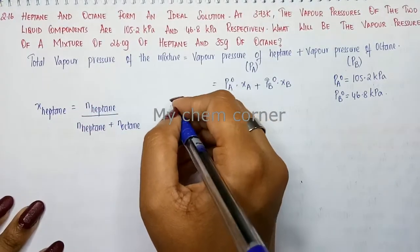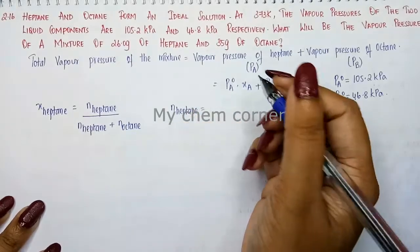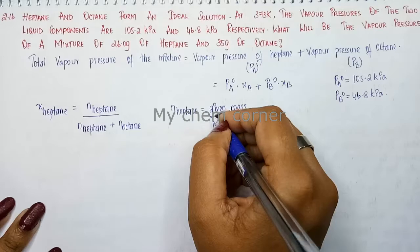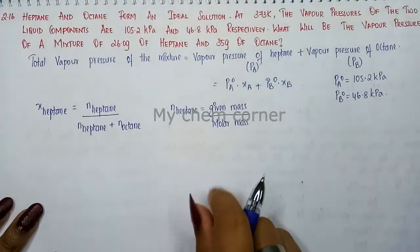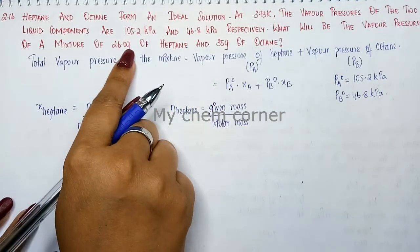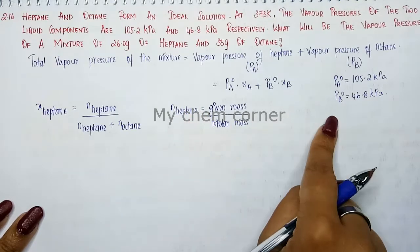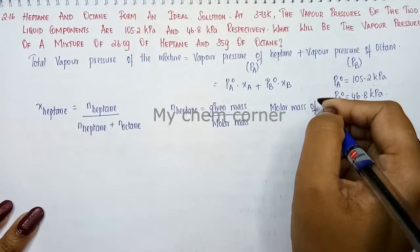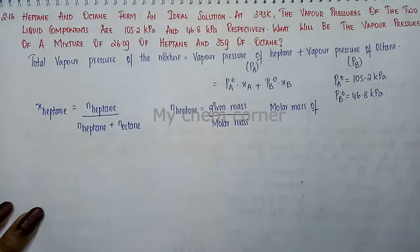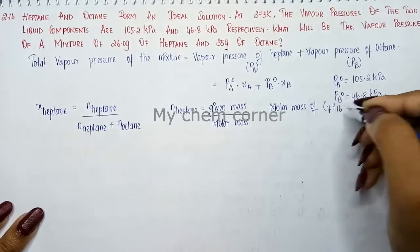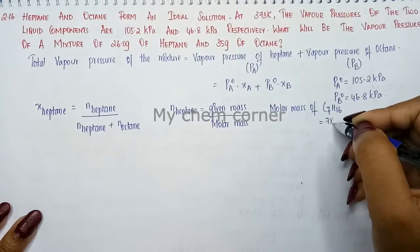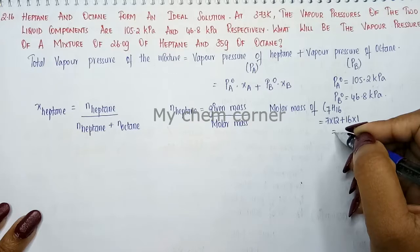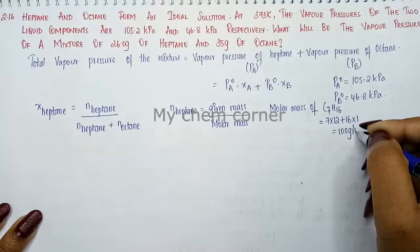Number of moles of heptane equals given mass divided by molar mass. The given mass of heptane is 26.0 grams. The formula for heptane is C7H16, so the molar mass is 7 carbon atoms times 12 plus 16 hydrogen atoms times 1, which simplifies to 100 grams per mole.